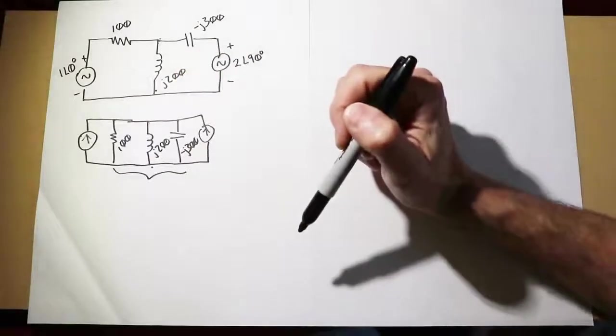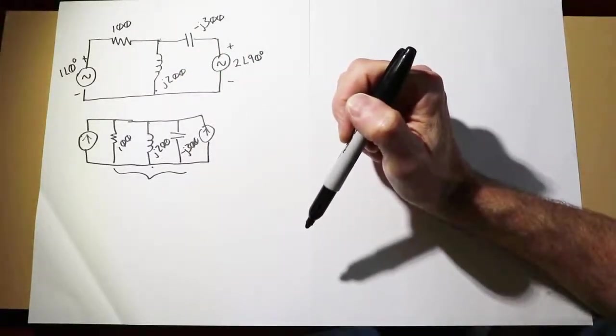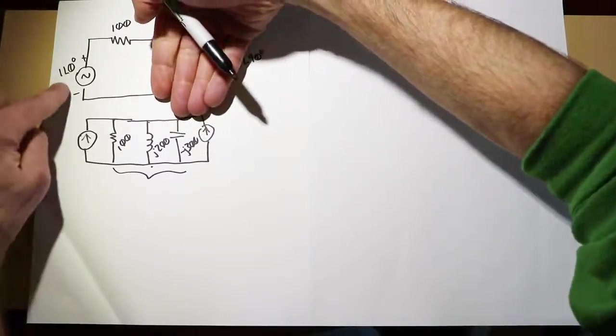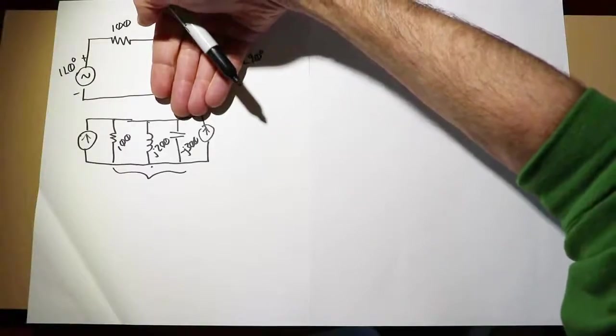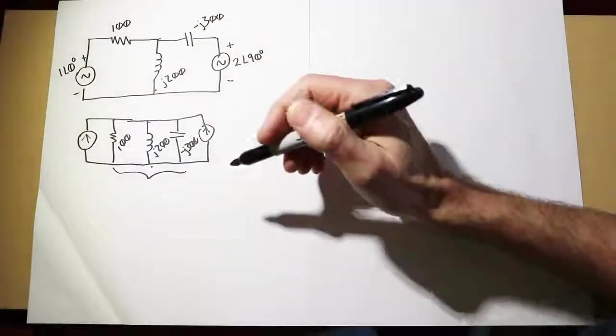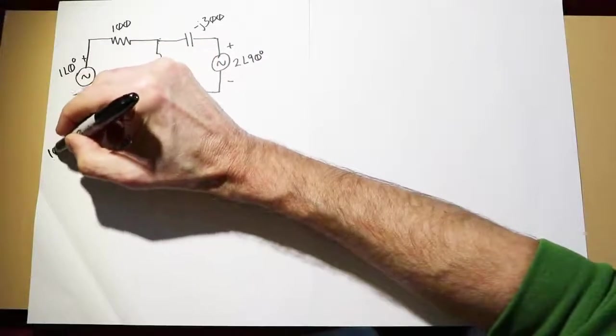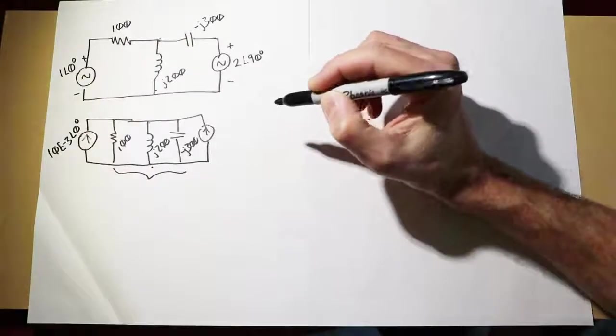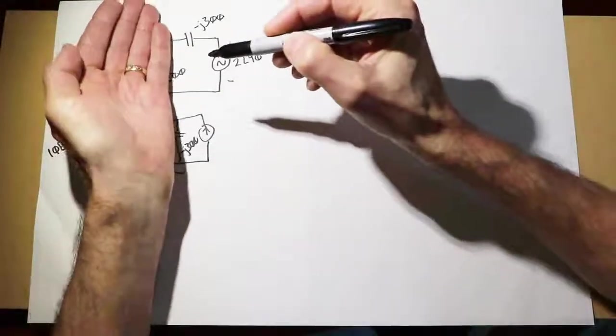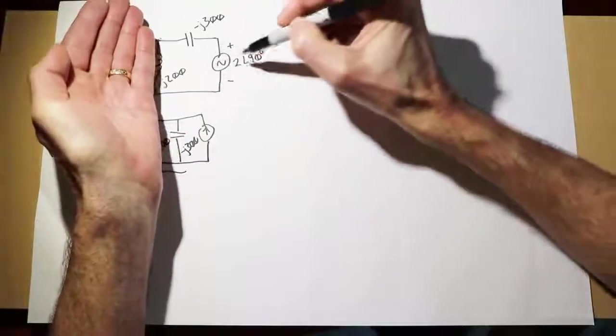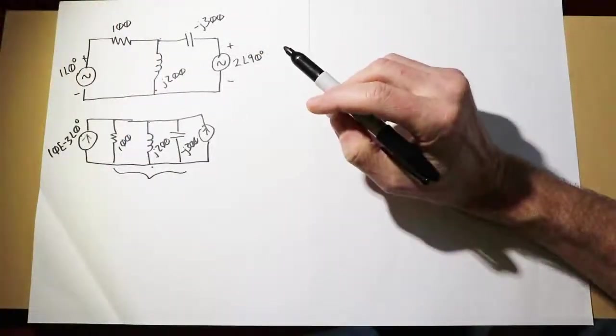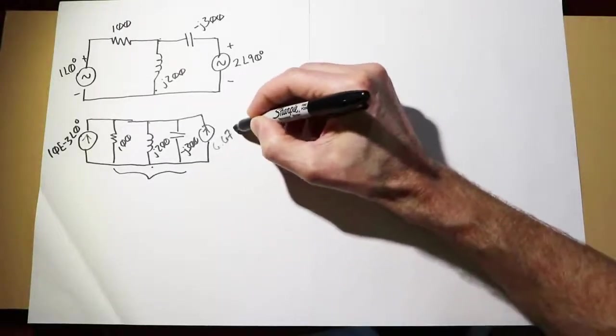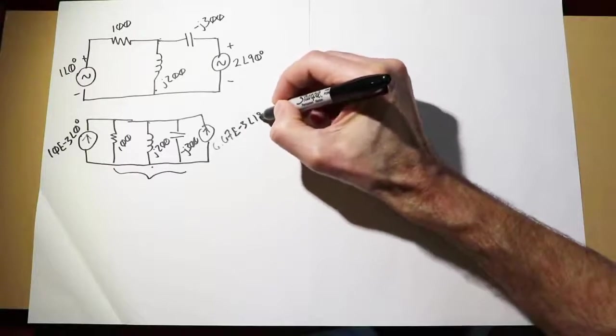So to find these two sources, we would have to find the short circuit current, in which case we would replace this section with a short. What we would find is the 1 volt source would drop across the 100 ohm, giving us an equivalent current of 10 milliamps at an angle of 0 degrees. Similarly, on this end,